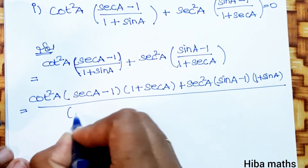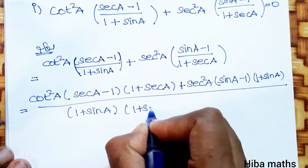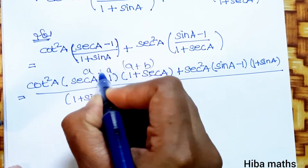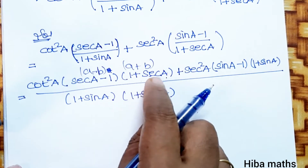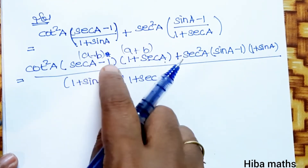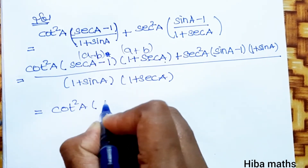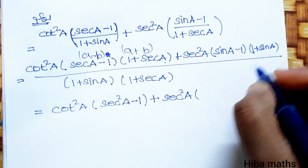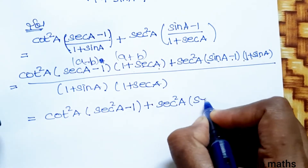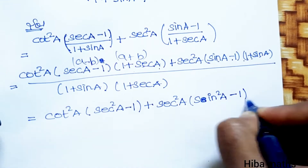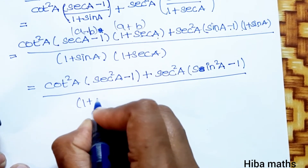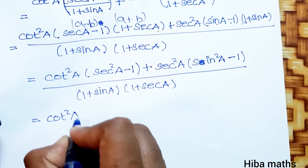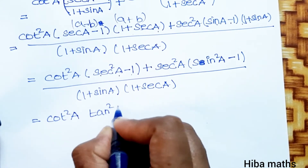We multiply the two denominator terms: (1 plus sin a) into (1 plus secant a). In the numerator, using the identity (a minus b)(a plus b) equals a squared minus b squared: cot squared a times (secant squared a minus 1), plus secant squared a times (sin squared a minus 1), all divided by (1 plus sin a)(1 plus secant a). Note that secant squared a minus 1 equals tan squared a.